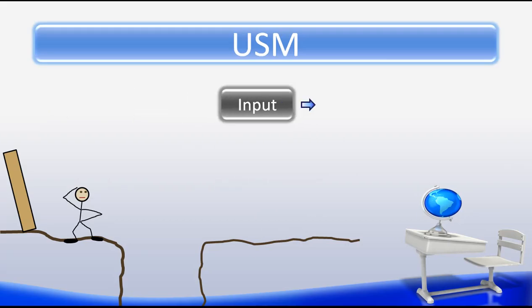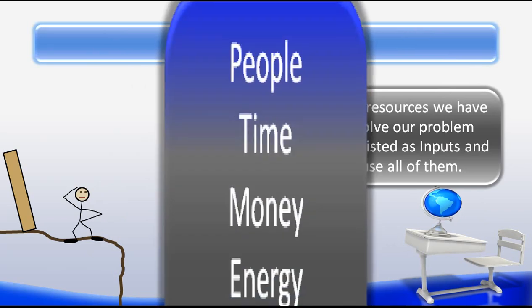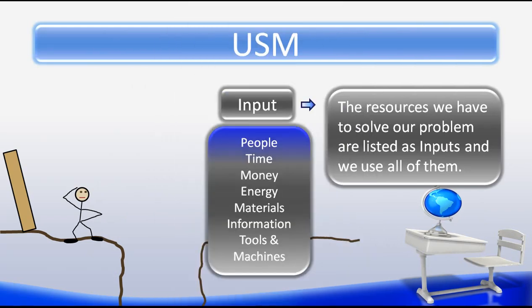In the inputs step, we find out what we will have available to us to accomplish our goal. In the development of the new or improved technology, all seven inputs are used and cannot be developed if all seven inputs are not available. The inputs include people, time, money — which is also known as capital — energy, materials, information, and finally, tools and machines, which is one input.